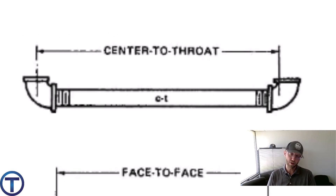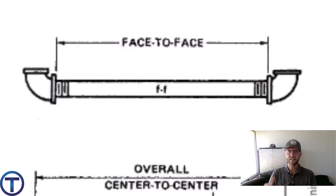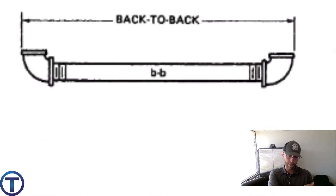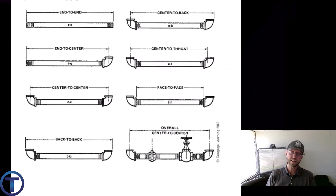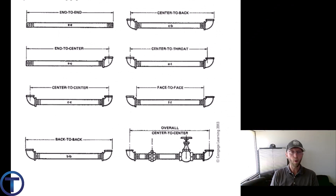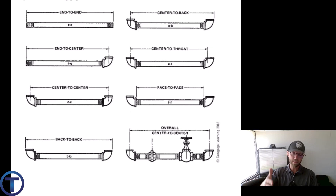Other measurement references include center-to-throat, where the throat is the inside lip of the open fitting. You might also measure face-to-face, which is where the fittings stop and the pipe extends beyond, or back-to-back, pulling from one back side to another. In any of these situations, be aware of what you need to subtract or add. With face-to-face, for instance, you add back some length so the pipe is long enough to extend into the fittings.